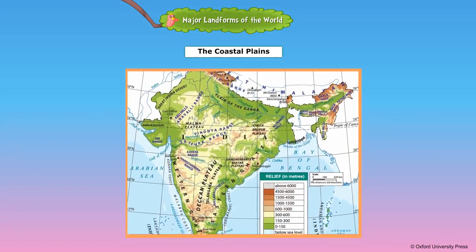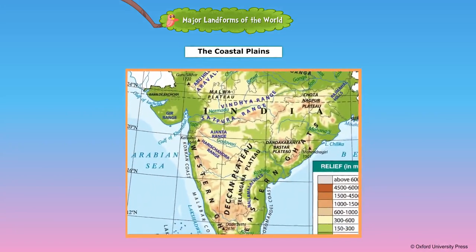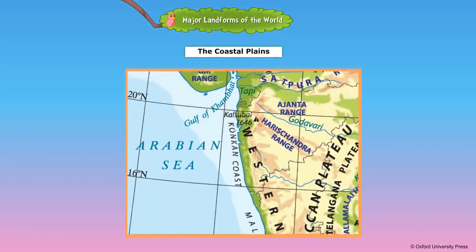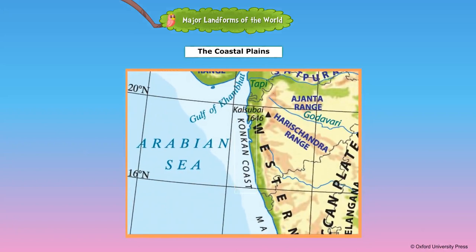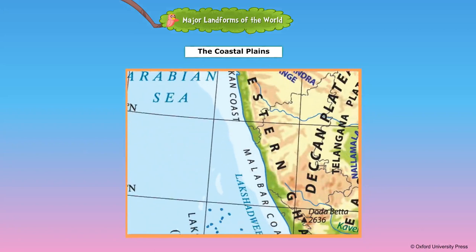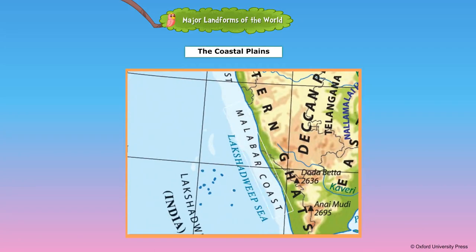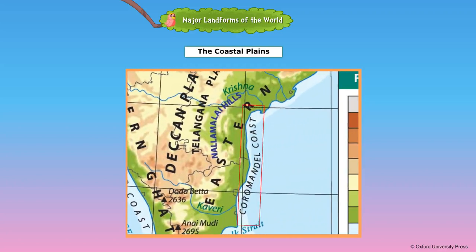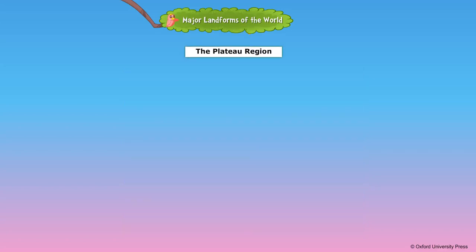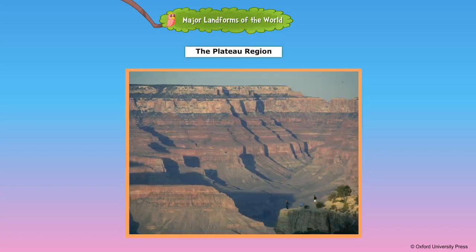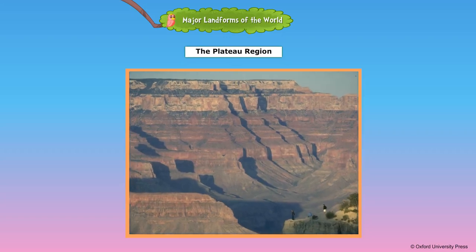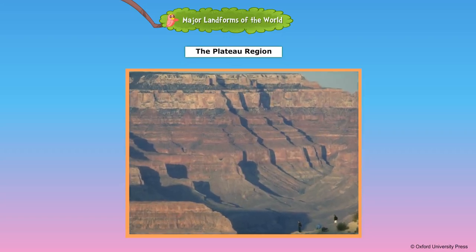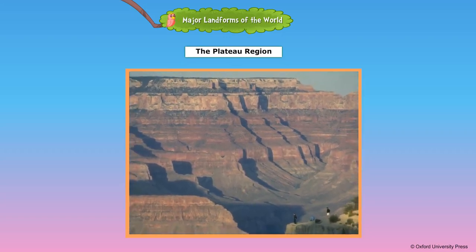Some narrow plains lying between the ghats and the sea are known as coastal plains. The Konkan, Malabar, and Coromandel coasts are the distinct coastal plains in India. The plateau region includes the Malwa Plateau and the Chota-Nakpur Plateau to the north of the Vindhyas and the Deccan Plateau to the south.